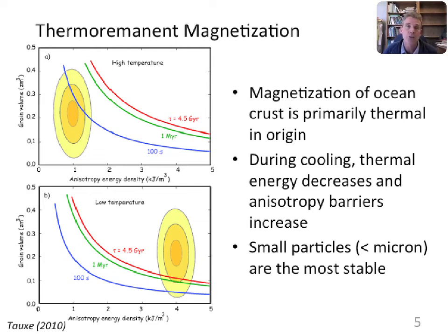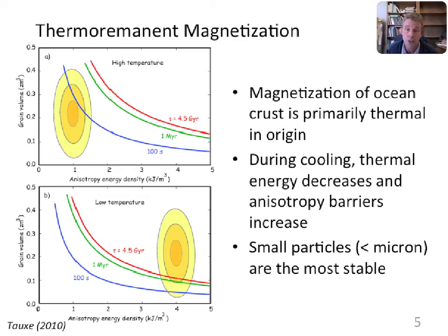That's the process of how thermal magnetization is acquired in the ocean crust. It turns out it's really small particles that are the best at recording and maintaining field information — the vertical scale is in zeptometers cubed (10⁻²¹ cubic meters), corresponding to micron-size grains, which are the really good recorders of the magnetic field.